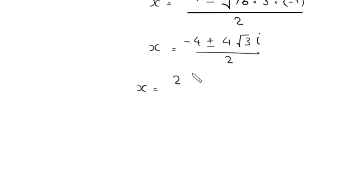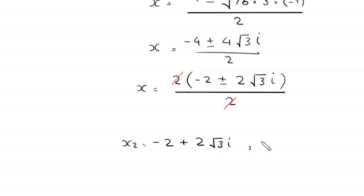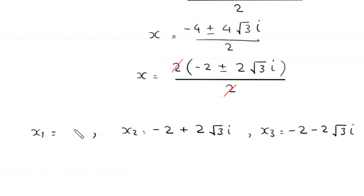From the numerator we factor out 2 as a common factor, leaving negative 2 plus or minus 2 times root 3 times i, divided by 2. This 2 cancels with the denominator, giving us two values: x₂ equals negative 2 plus 2 root 3 i, and x₃ equals negative 2 minus 2 root 3 i. The first solution found was x₁ equals 4. These are the three solutions of this equation.